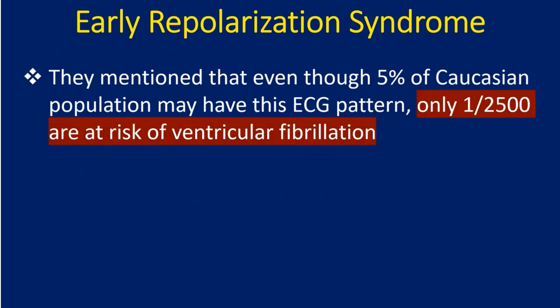They mentioned that even though 5% of the Caucasian population may have this ECG pattern, only 1 in 2500 are at risk of ventricular fibrillation.